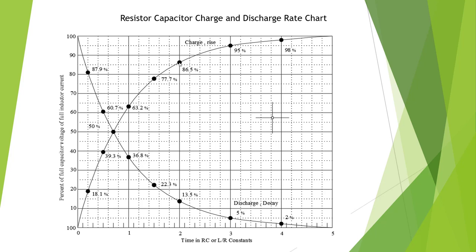The second time constant would be 86.5%, 95%, 98% and we start approaching 100%. As we discharge, we're going to start at 100 or close to it and go down to 36.8%, 13.5%, 5%, 2% and close to 0. We're going to consider that a capacitor is fully charged in five time constants.